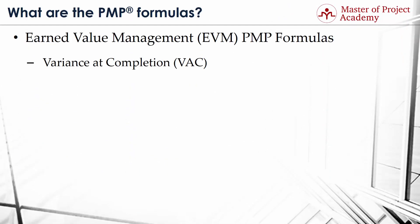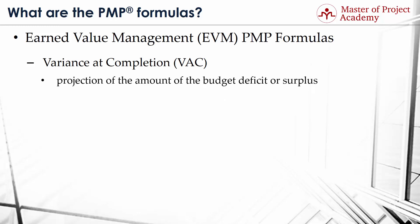PMP formula number 10: Variance at Completion or VAC. Variance at Completion is a projection of the amount of the budget deficit or surplus. It represents the difference between the budget at completion and the estimate at completion. Accordingly, its formula is: VAC equals BAC minus EAC.